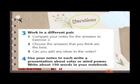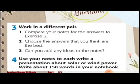Working with a different pair: Number one, compare your notes for the answers to exercise two. Two: Choose the answers that you think are the best. Three: Can you add any ideas to the notes? Four: Use your notes to each write a presentation about solar or wind power — write about 150 words in your notebook.